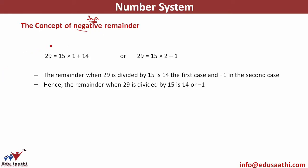So let's look at an example. If I have to write 29 and I am dividing it with 15, it can be written as 15 into 1, which is 15, plus 14, which is 29. I can write 29 as 15 into 2 minus 1.